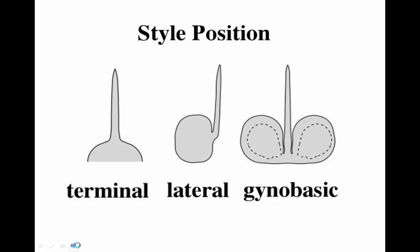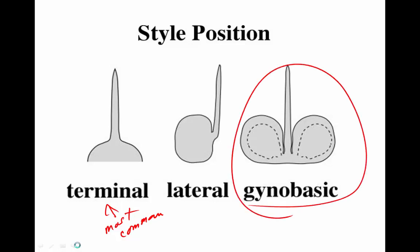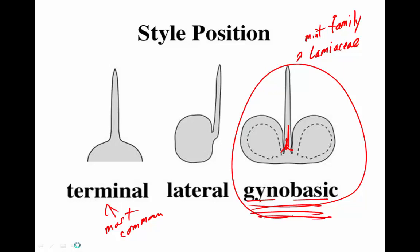The position of the style also varies. The most common is terminal attachment. One unusual type is gynobasic, found in the Lamiaceae — the mint family, which includes many aromatic herbs used in cooking. In gynobasic attachment, the style comes down and attaches at the base of the female part of the flower. If you end up doing Lamiaceae, you should know about this unusual style attachment that characterizes the family.